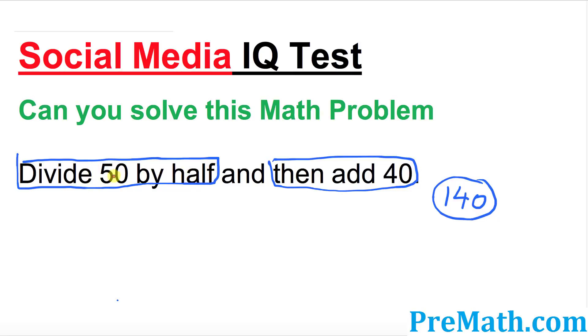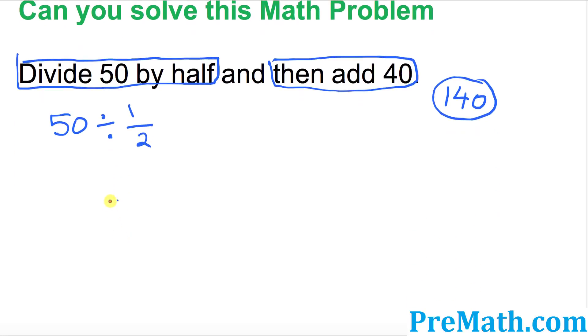The first one is 50. Divide 50 by what? Half. So write down 50 divided by a half. You know pretty well that whenever you're dividing by a fraction, you can change this division into multiplication and simply flip this fraction over.